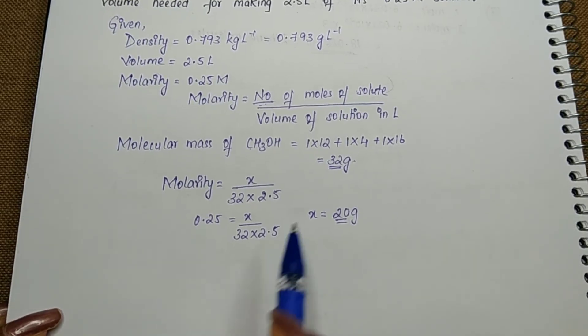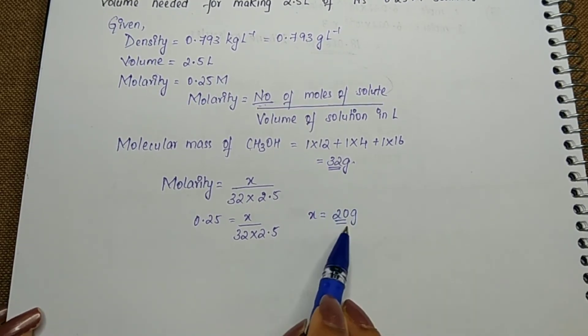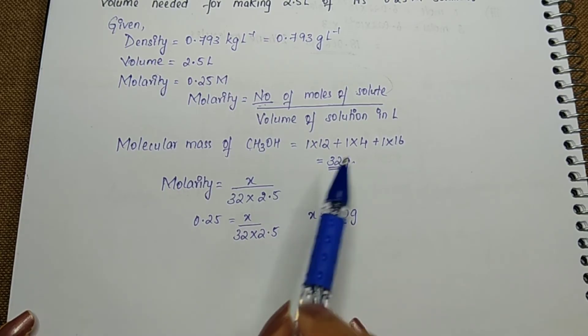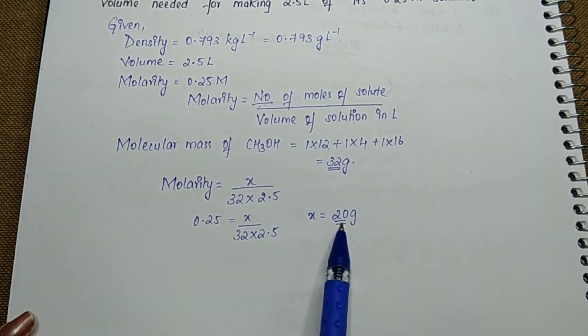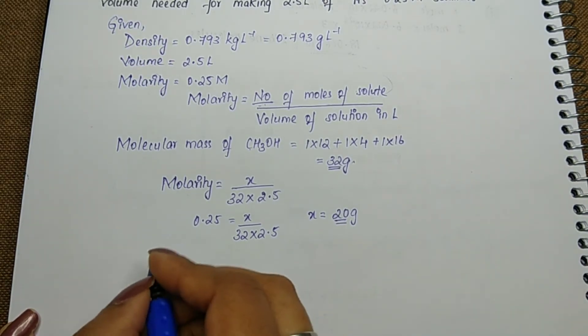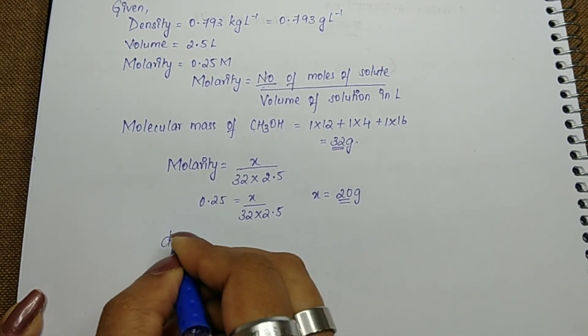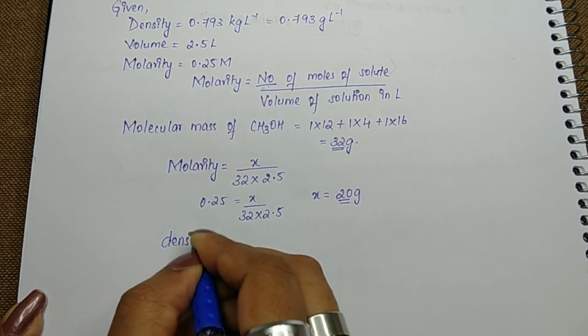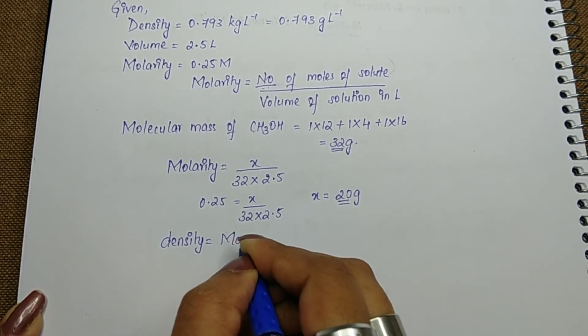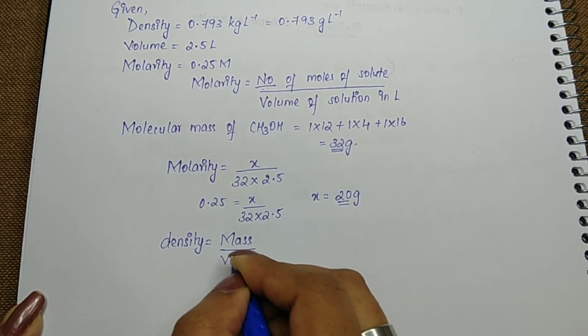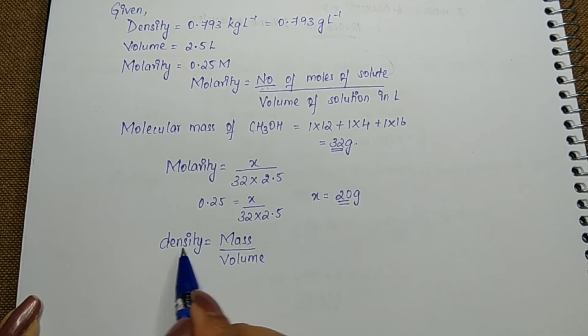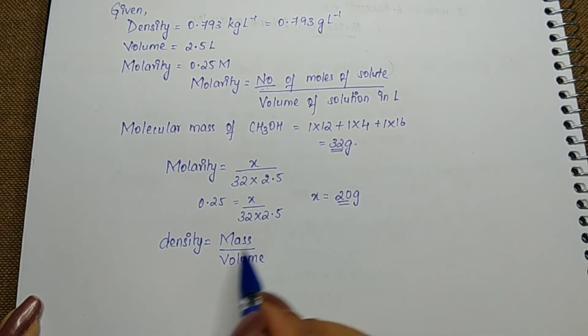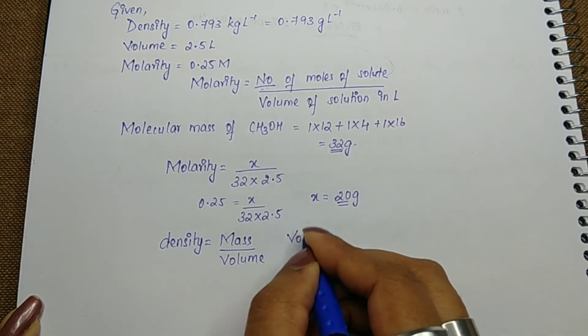We only found the given mass—we need to find the volume using density and given mass. The density formula is: density equals mass divided by volume. Density is given and we just found mass, so we can easily find volume.